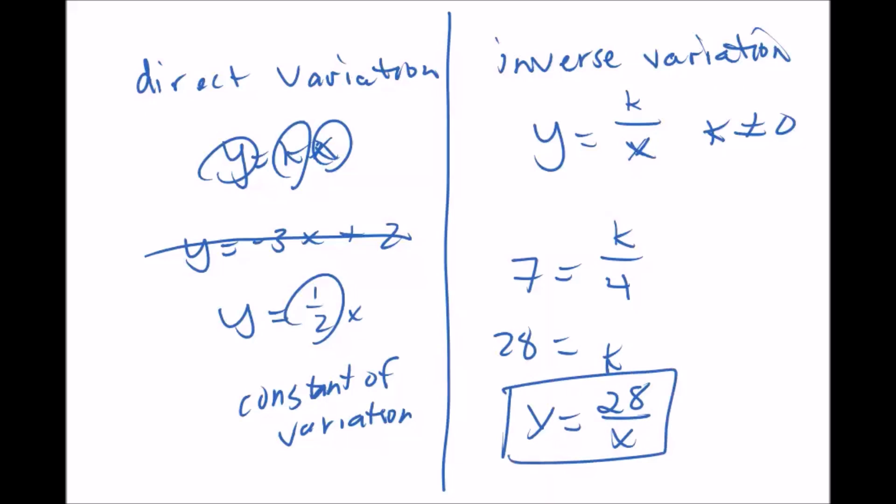This is our inverse variation equation, and then it'll say something like find y when x equals negative 2. So you just plug in negative 2, 28 divided by negative 2, and y equals negative 14.